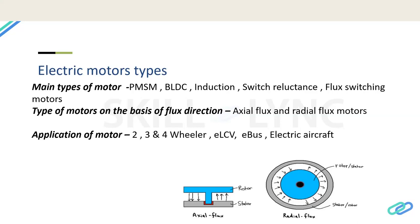Induction motors are used in the Tesla Model S and are pretty reliable. PMSM motors are a bit more efficient and easier to control. Switched reluctance motors don't have magnets, making them more reliable and lower cost, but the control system is more difficult. Flux switching motors fall under the switched reluctance category — they don't have a permanent magnet in their rotor but differ slightly in how flux interacts with the rotor.